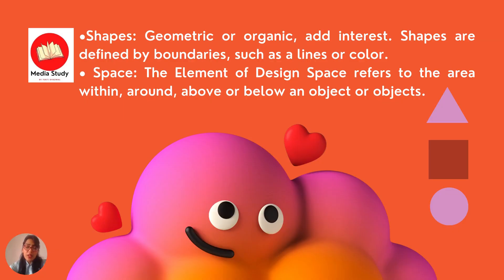Moving ahead to the next element, which is shapes. Shapes could be of two types — we can have geometric shapes and organic shapes, which help us to add interest to our entire design. We can add different line and color to various shapes. If you see this image on the screen, we have well-defined structures: triangle, rectangle, and ellipse. These are the geometric shapes, while organic shapes are those we draw freehand.